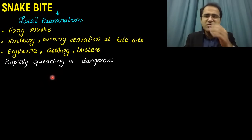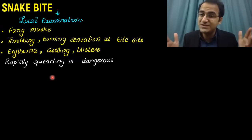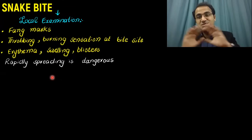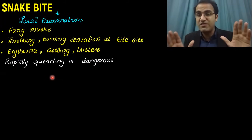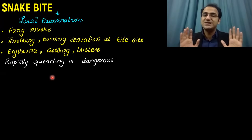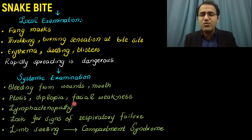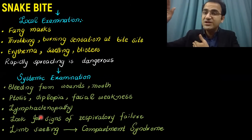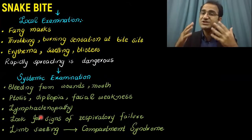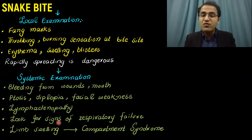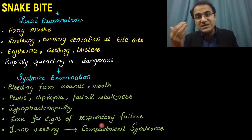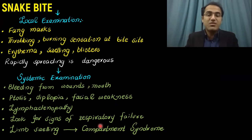Swelling is a very dangerous sign. If swelling was in half the limb and is now spreading to the whole limb, this patient has been bitten by a venomous snake and needs anti-snake venom — rapidly spreading swelling is an indication for ASV. Perform systemic examination: look for bleeding from wounds and mouth, neurotoxic signs like ptosis, diplopia, and facial weakness, lymphadenopathy, and signs of respiratory failure. Check for auxiliary or inguinal lymphadenopathy depending on the bite location.